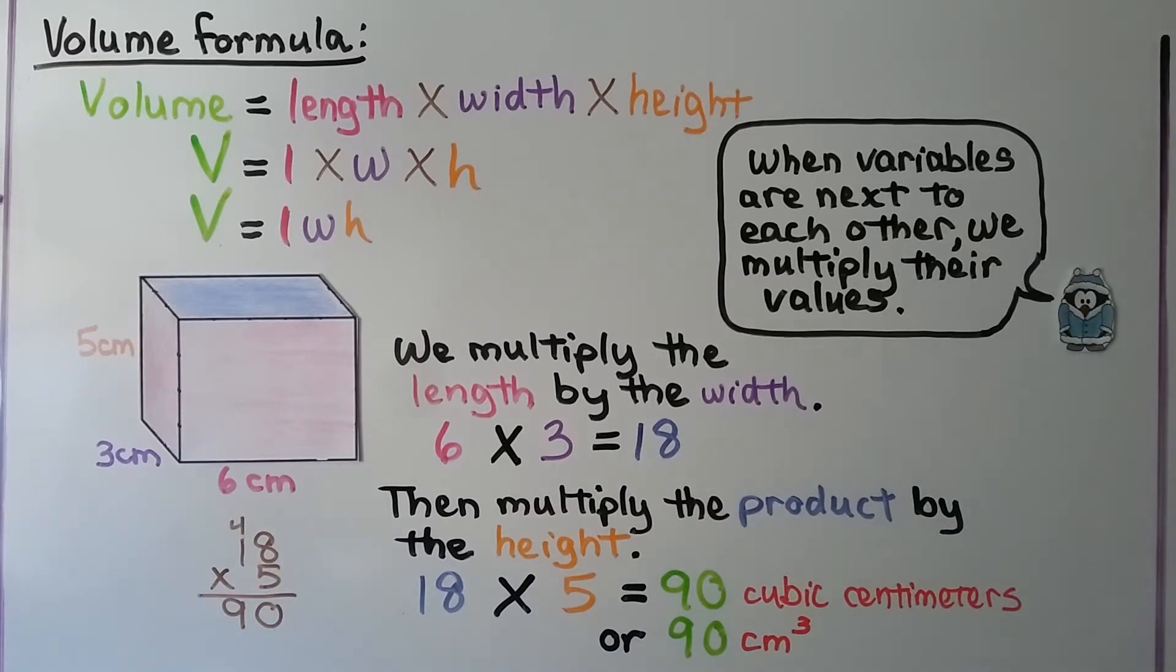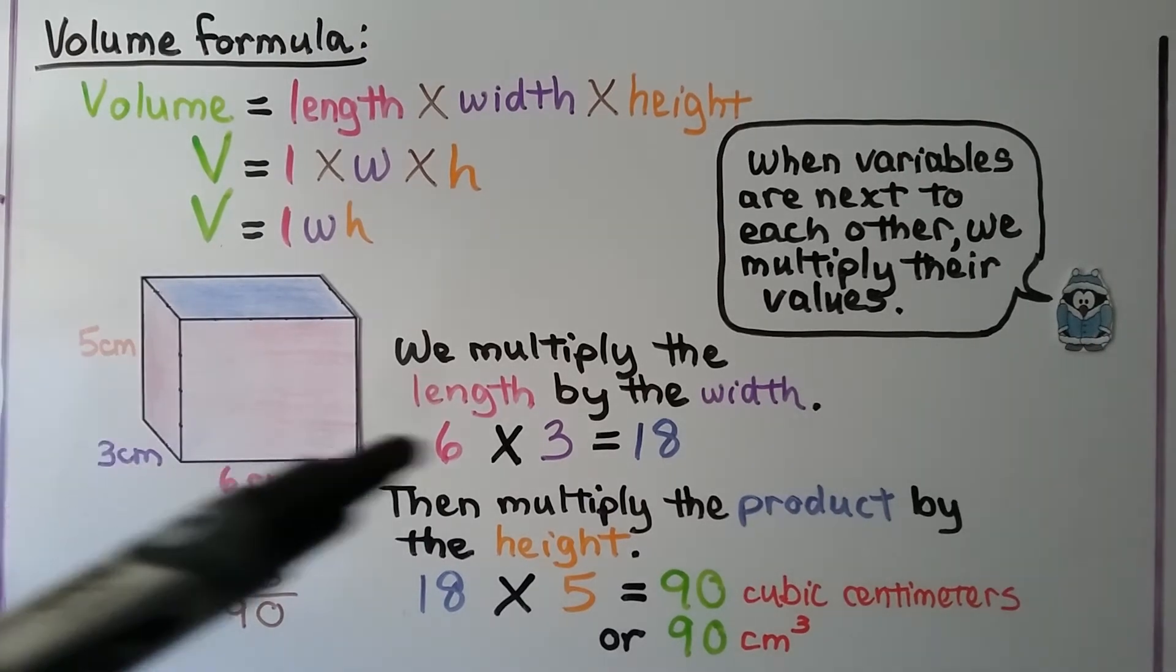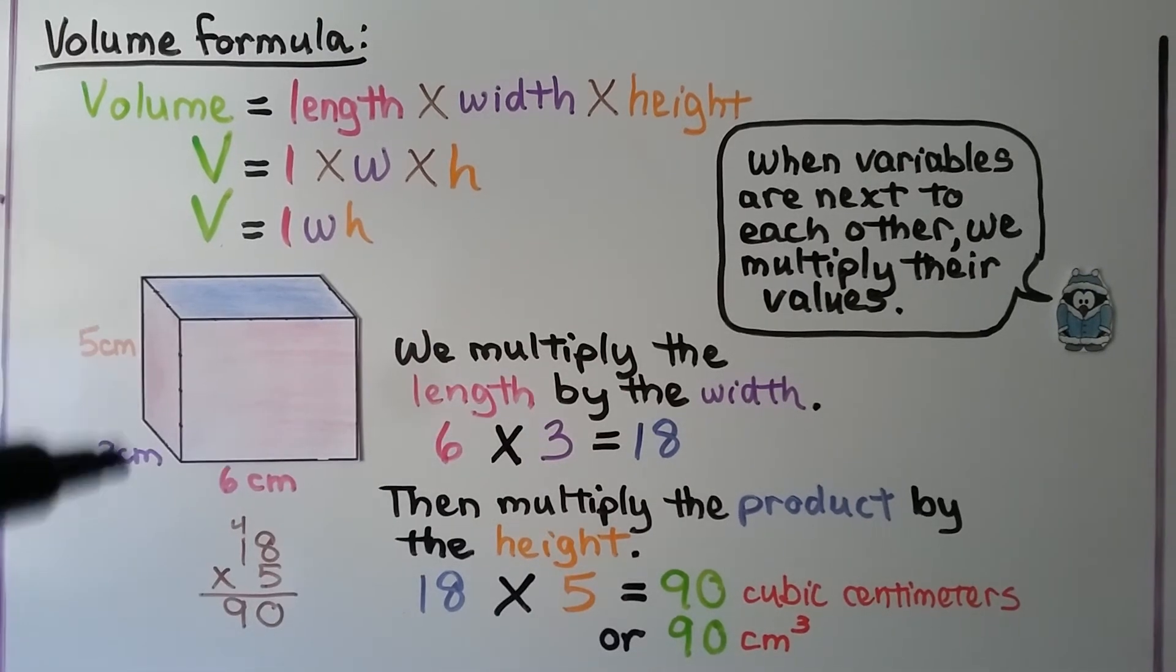We multiply the length by the width. We've got 6 centimeters times 3 centimeters. That's 18. Then multiply the product, 18, by the height, 5. And 18 times 5 is 90. It's in centimeters. We've got 3 dimensions. It's 90 cubic centimeters. Or we can write it as cm abbreviation for centimeters, and a little 3 exponent for cubed.